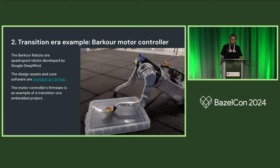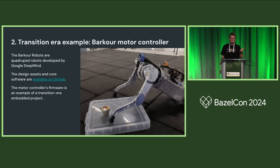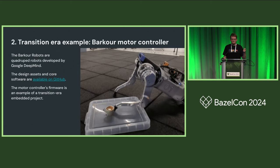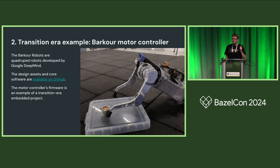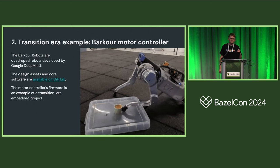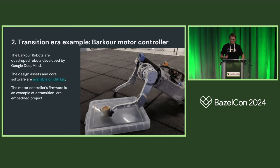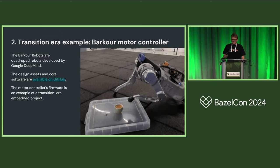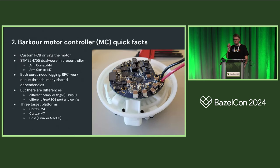Here's a concrete example: a quadruped robot — one of the Barcourt robots developed by Google DeepMind. This robot is open source, including its CAD files and software. I'd like to talk specifically about the firmware for the robot's motor controller, which is an example of an embedded project from the transitional era. The motor controller lives in the shoulder of the robot, inside a cylindrical part, as a custom printed circuit board driving current through the motor to move the robot's paw.